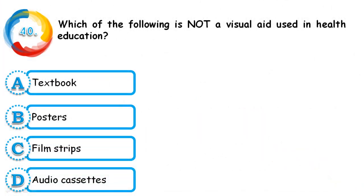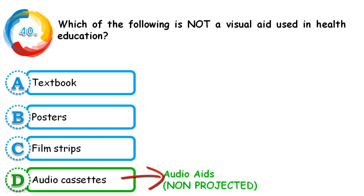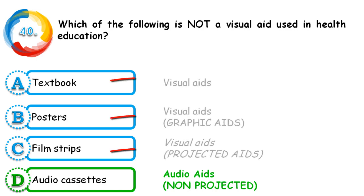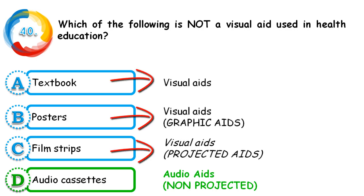Question 40: Which of the following is not a visual aid used in health education? Options are textbook, poster, film strips, and audio cassettes. The correct answer is audio cassettes — this is a non-projected audio aid. The remaining three options — textbook, poster, and film strips — come under visual aids.